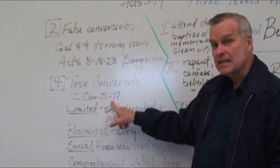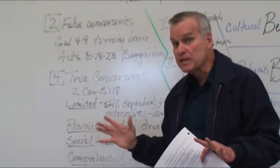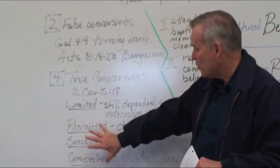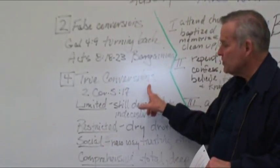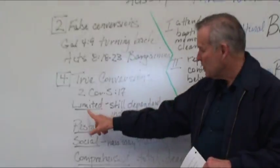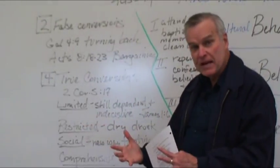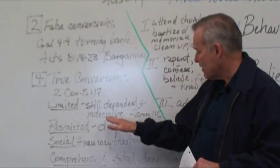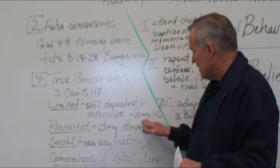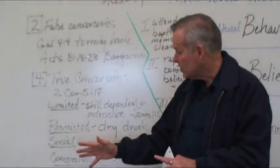2 Corinthians 5:17 says, If any person is in Christ, they're a new creation. All things become new. And here are four kinds of things that become new. The first kind of true conversion doesn't sound very true. It's called limited conversion. This person has come to faith, but they're still dependent on others for decision making. They're rather indecisive. James 1:6 talks about them being unstable in their conversion.